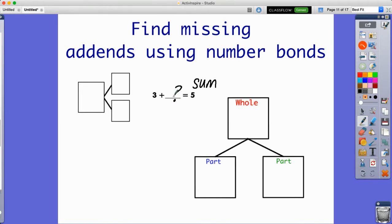So we have a missing addend right here because we're adding these together to find the sum. I'm going to put 5 right here because that is where our sum goes, it's our total. Then I'm going to put this 3. This 3 is one of our addends, so I'm going to put it right here.